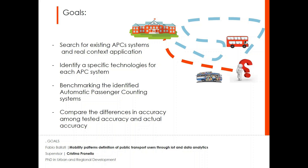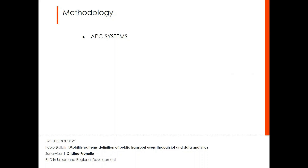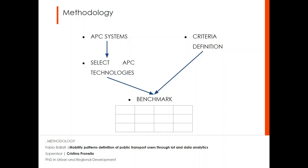Compare the differences in accuracy among test accuracy and actual accuracy. In order to carry out the benchmarking containing APC information, an initial work concerns the research of which technologies exist on the market. Once the technologies currently used and present in the market have been detected, a specific system has been identified for each. The characteristics of each technology can be studied and evaluated on the basis of specific criteria.